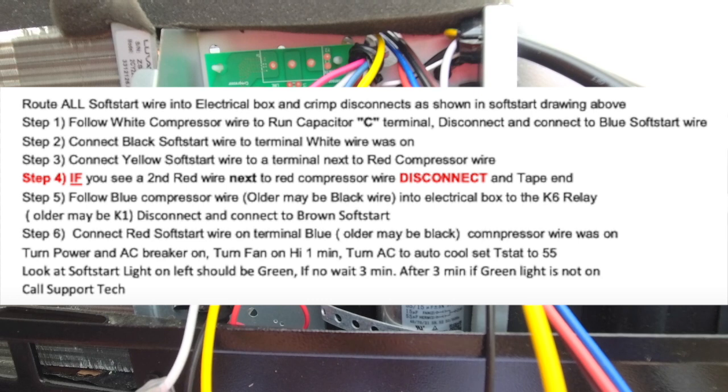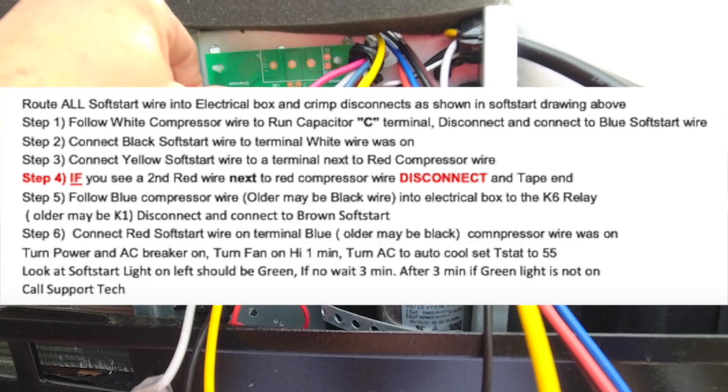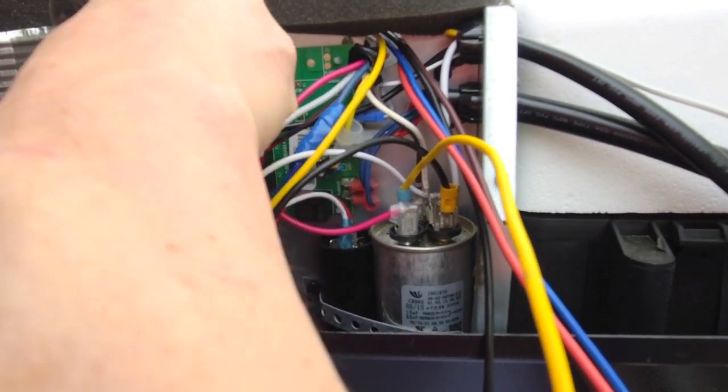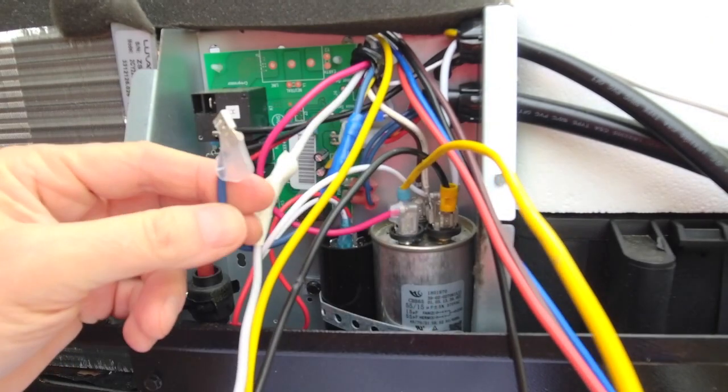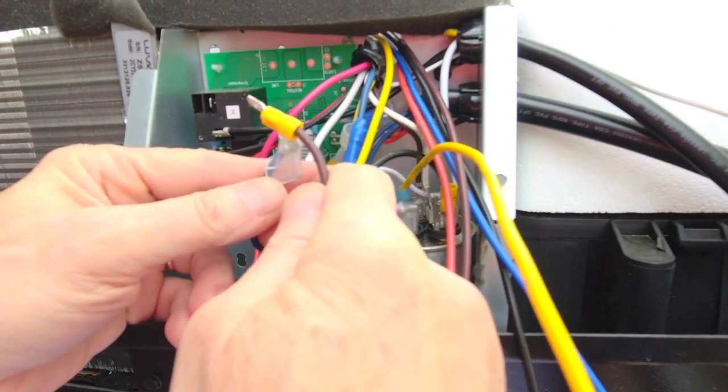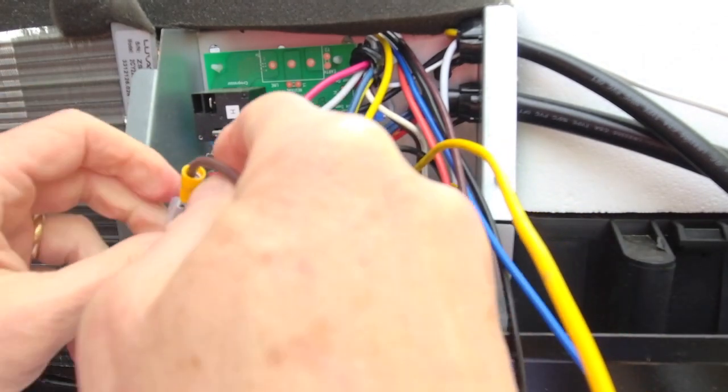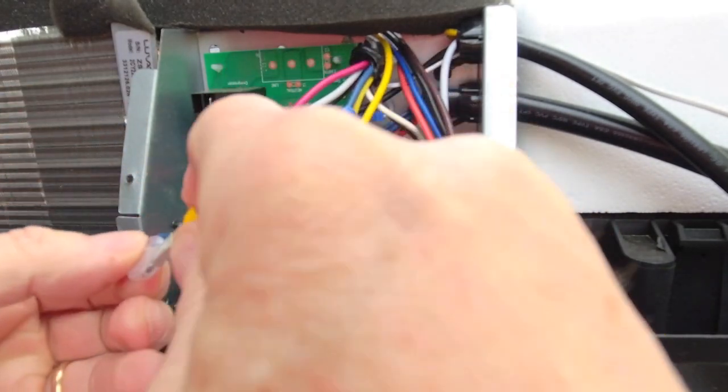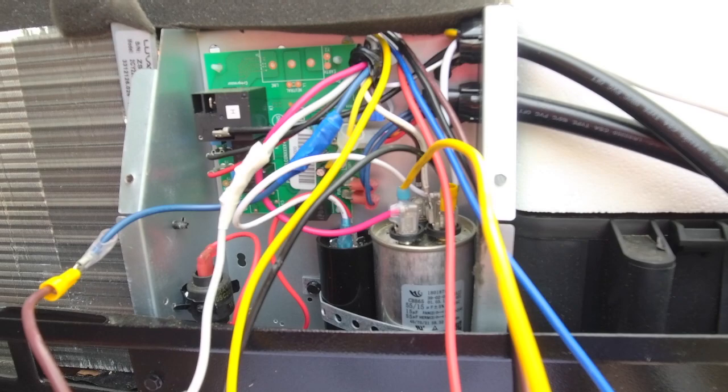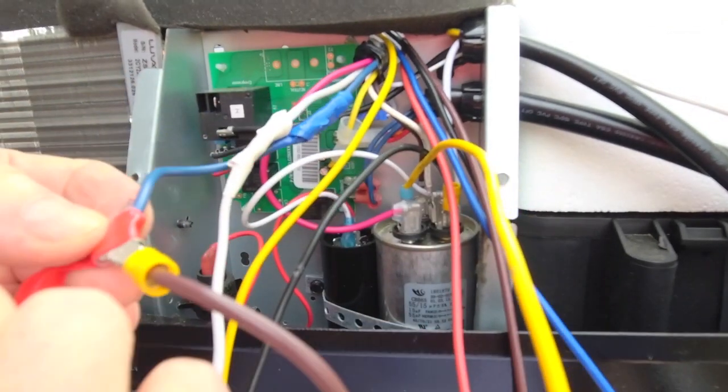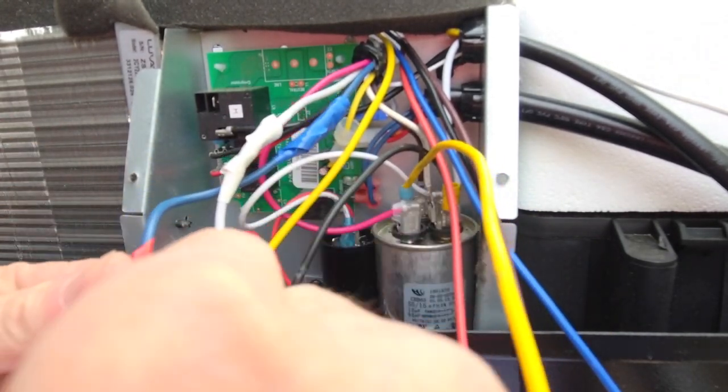Follow the blue compressor wire into the electric box into the K6 relay - that's this guy right here. Disconnect and connect it to the brown soft start. So we disconnect this. There's our wire right there. Here is our brown soft start wire. We'll connect those two together. That's all good. I'm going to put a little wrap of tape around there because I don't like bare things hanging out. That's always asking for trouble.